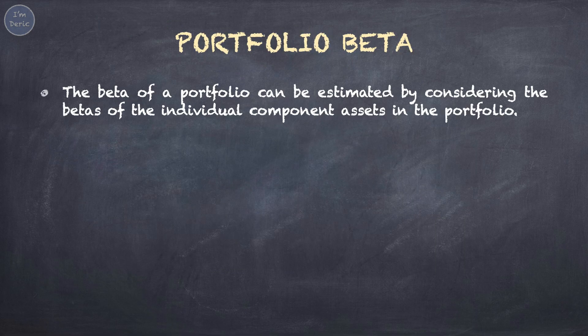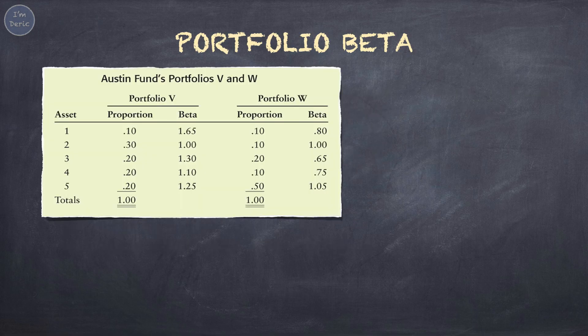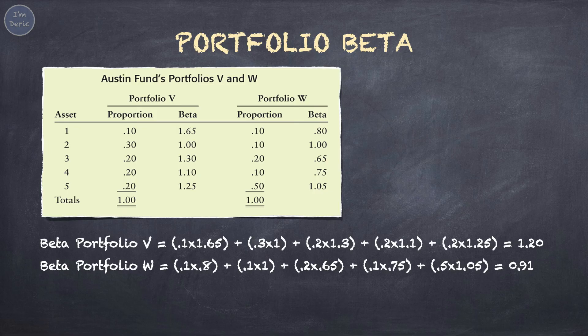The beta of a portfolio can be estimated by considering the betas of the individual component assets in the portfolio. According to the formula, portfolio beta is calculated as the summation of the weight of each asset times the beta of that asset. Let's put it into calculation. The beta of portfolio V is 1.20, while the beta of portfolio W is 0.91.